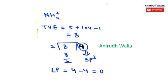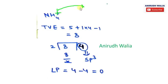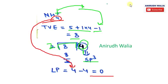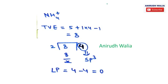Example: NH4+. The plus sign means a cation — one electron is lost. So total valence electrons = 5 (N) + 1 × 4 (H) − 1 (charge) = 8. Divide by 2: 8 ÷ 2 = 4 orbitals. Hybridization is sp3. Lone pair = 4 − 4 = 0. Compare: in NH3 there is 1 lone pair, but in NH4+ there are 0 lone pairs.